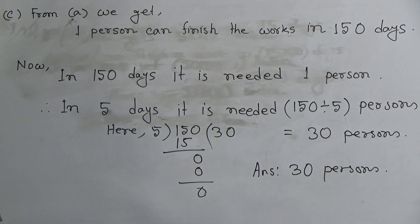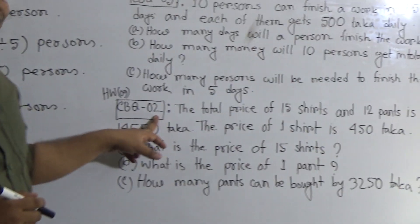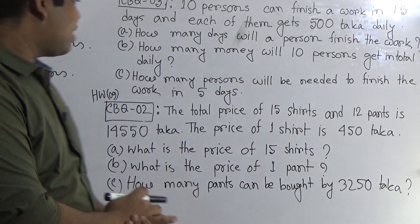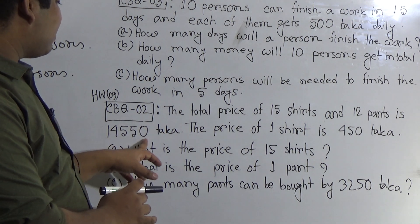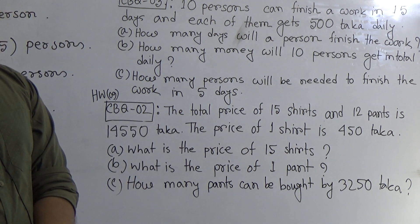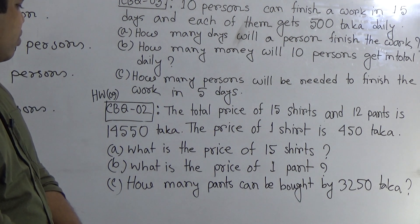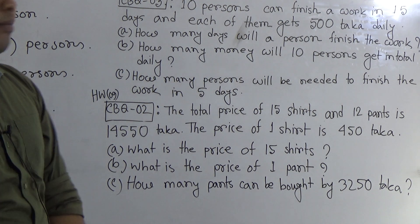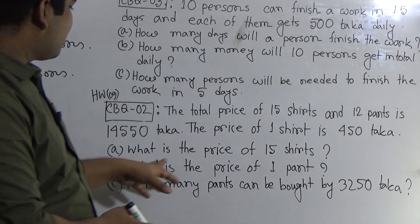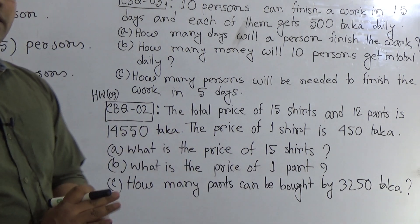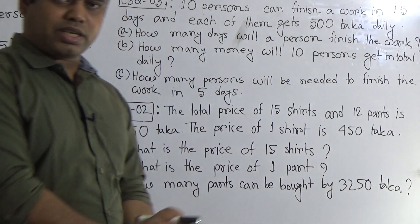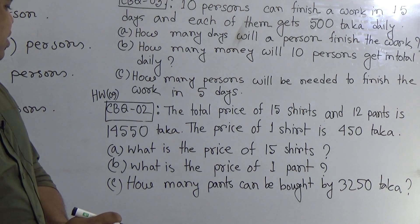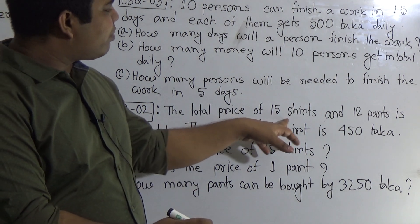This is our today's CW. CBQ number 2 will be your SW — SW number 9. My dear students, we read the question: The total price of 15 shirts and 12 pants is 14,550 taka. The price of one shirt is 450 taka. Question a: What is the price of 15 shirts? From the stem, the price of one shirt is 450 taka, so the price of 15 shirts is found by multiplication.